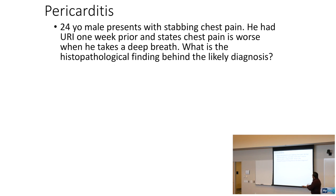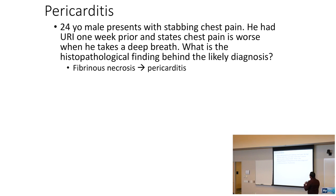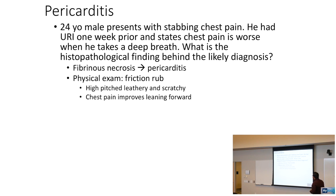A 24-year-old male with stabbing chest pain that worsens with deep breathing had a URI one week prior. The histopathological finding for the likely diagnosis — pericarditis — is fibrinous necrosis. Physical exam shows a friction rub, described as a high-pitched, leathery, scratchy sound. Chest pain improves when leaning forward.